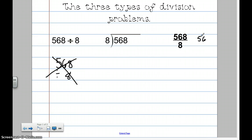You could also see, or 568, sorry, 568 divided by 8. You can see it like that also. This does mean that you need to do division. So, these are the three different ways that you could potentially see a division problem.